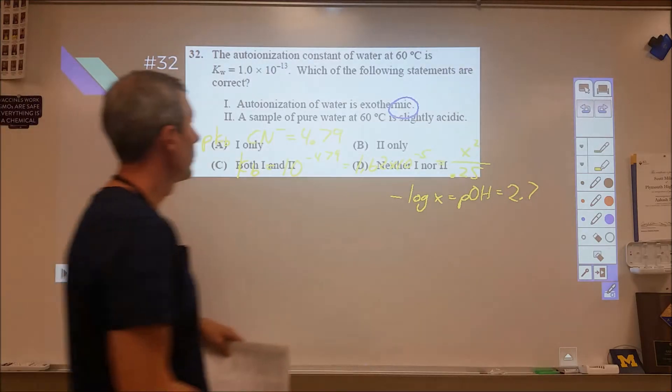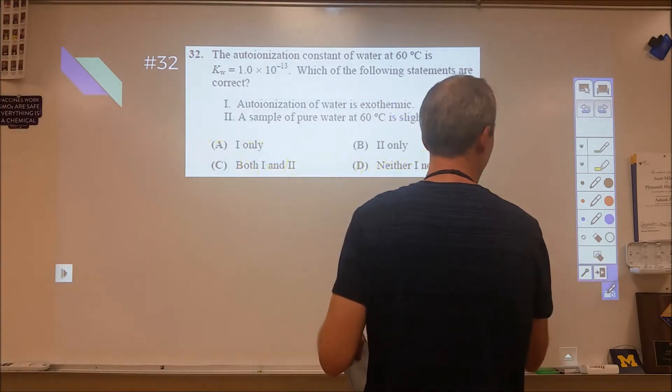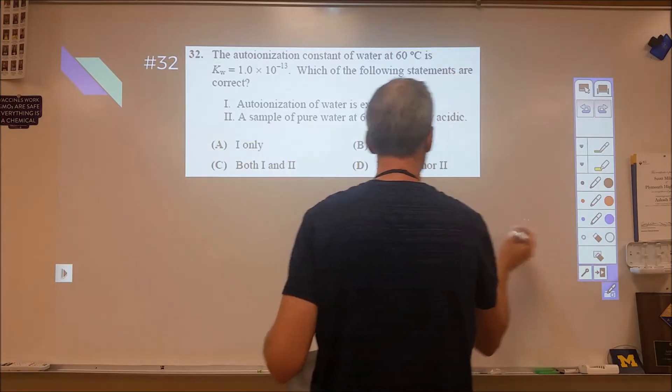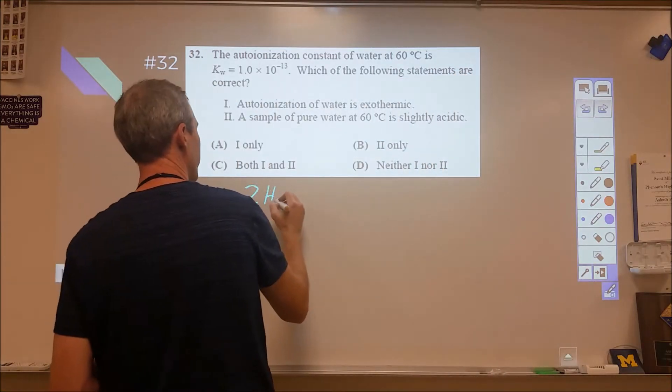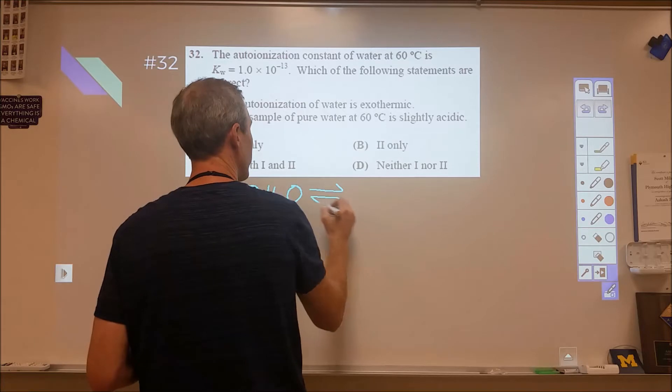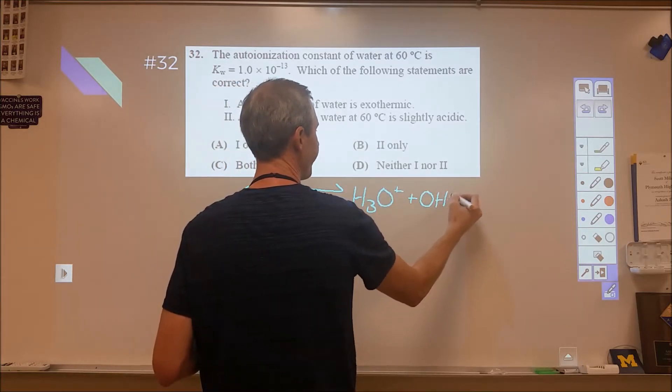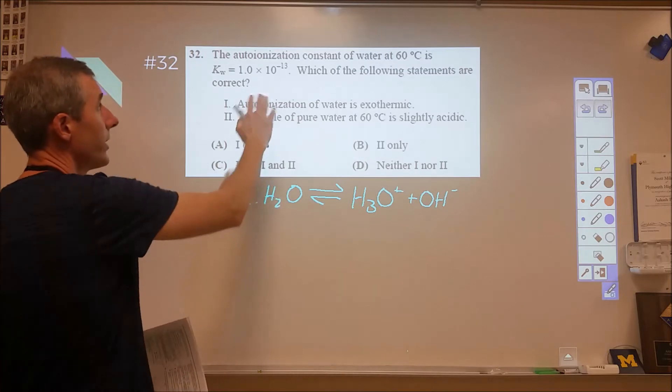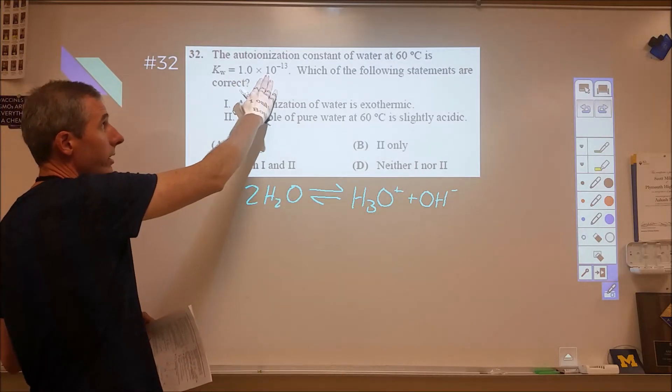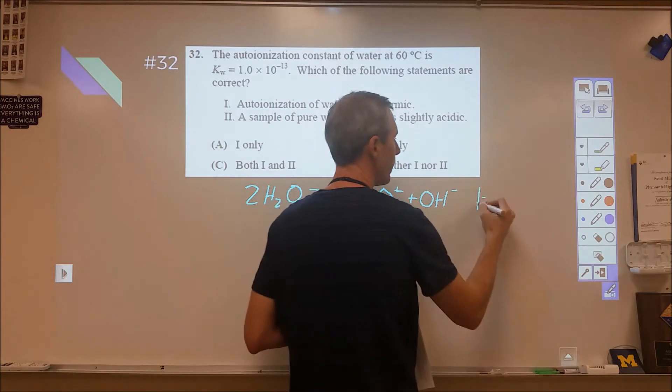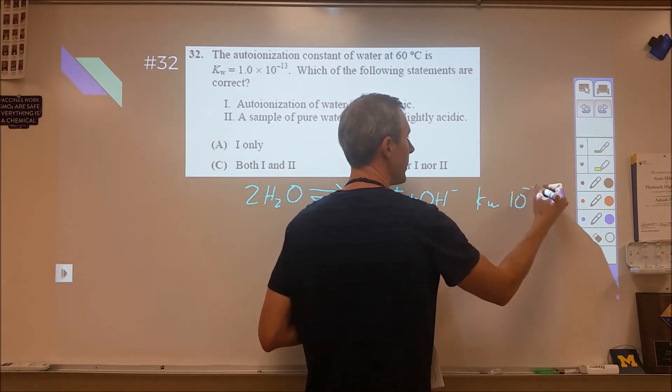Problem 32, we're given the auto-ionization reaction for water. So if we take a look at that, that's two water molecules colliding, turning into a hydronium and a hydroxide. It gives us the Kw at 60 degrees is 10 to the negative 13th. We know that the Kw for this is 10 to the negative 14th at standard temperature, 25 degrees.